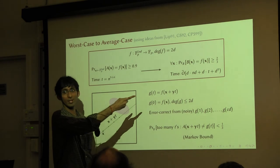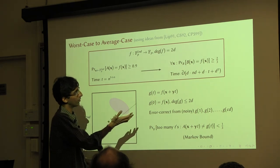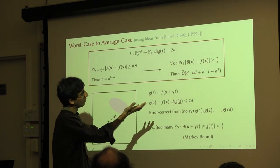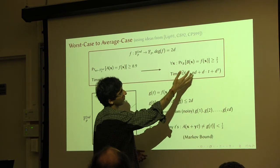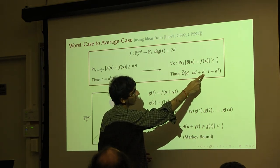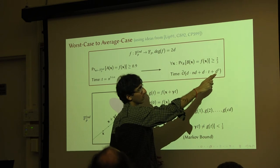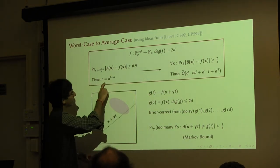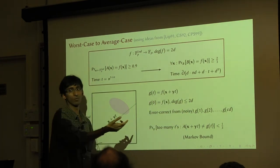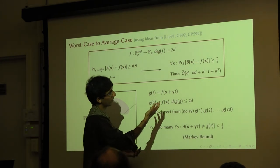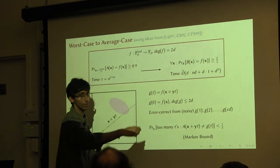I have to tell you the running time, because I claim this reduction is very efficient. You have to go through C times D points — writing down the points takes that much time, absorbing the constant into the O-notation. Then you call algorithm A on all of these points: it takes T time at each point and there are C times D points. Then you run the error-correcting algorithm. If T is n to the 1 plus alpha and D is log-squared n, then ignoring log factors, this is something like O-tilde of T — hiding polylog factors.